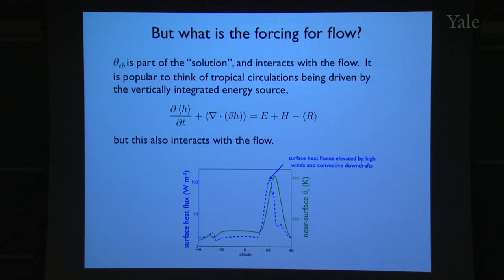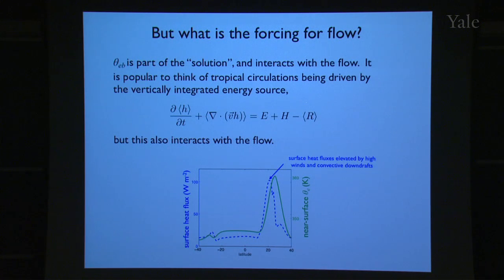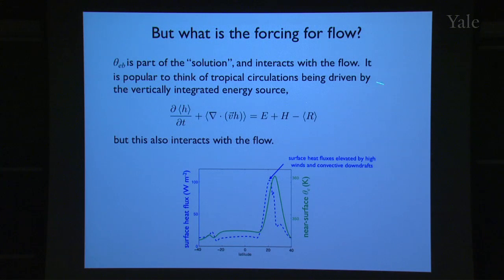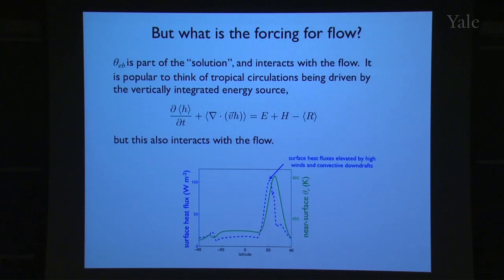This raises the question: I've shown a diagnostic framework — we know that free tropospheric temperature and boundary layer θE have to hang together. But we can't think of boundary layer θE as being set externally; θE is really part of the solution and can be advected by the flow. One approach that's become popular is to think of tropical circulations as being driven by the source of energy into the atmospheric column: where you're heating the column you tend to have ascent, where you cool it you have subsidence.